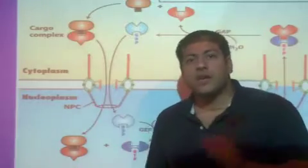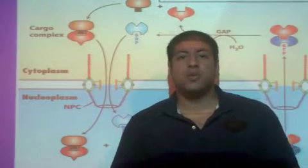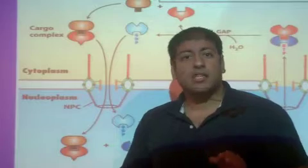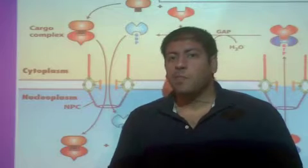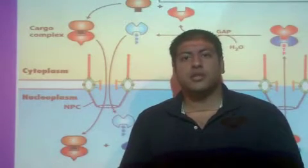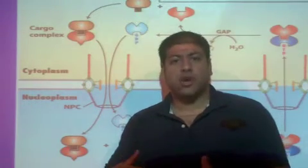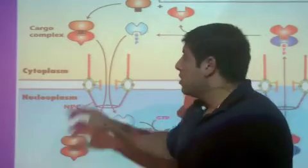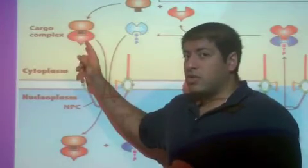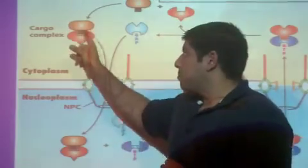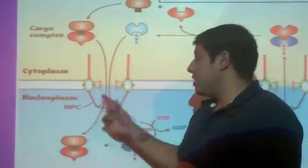Now, importin is very similar to another protein that we looked at before, the SRP. Remember, the SRP was the signal recognition particle, and its job was to escort the ribosome to the ER. So the job of the SRP was to bind to the signal sequence that was coming out of the ribosome and then escort the ribosome to the ER. Well, here, importin is going to recognize and bind to the NLS of the protein destined for the nucleus. And now, importin plus the cargo protein are going to go ahead and now they're going to be able to go through the nuclear pore.